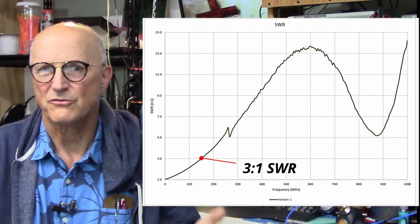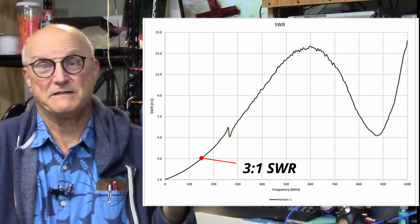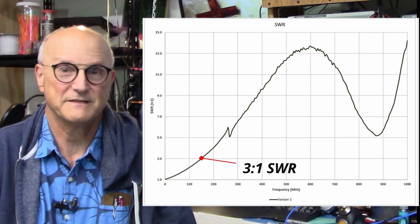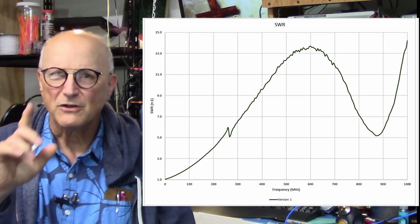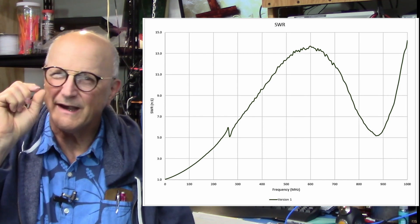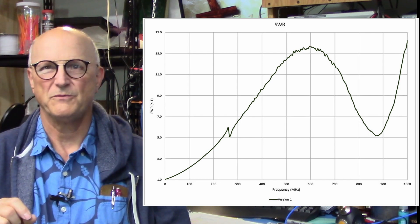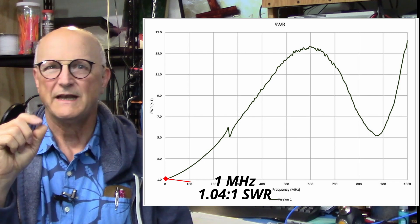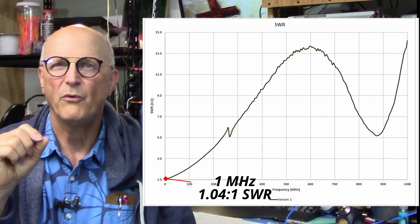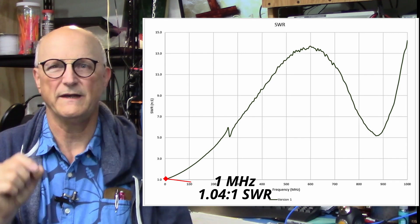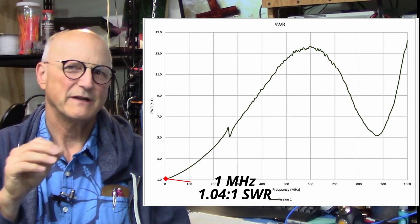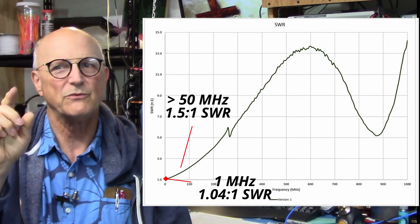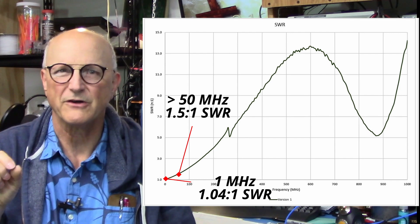I just soldered them onto the connectors and then tested the whole thing to see how well it worked. As you can see, the SWR climbs rather sharply and then does a lot of weird and strange things. Well, none of this is terrifically surprising, at least considering the ugliness of the assembly. However, at the lowest frequencies, it is doing exactly what we want it to do. At one megahertz, it has an SWR of 1.04 to 1.